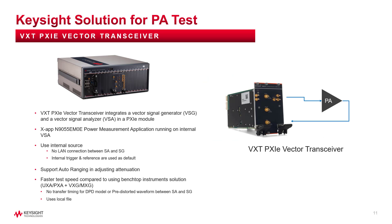Another solution is based on the VXT-PXIe transceiver, which integrates the vector signal generator and vector signal analyzer in a PXIe module. No LAN connection is needed — it uses internal trigger and reference, and supports auto-ranging in adjusting attenuation. This solution for PA testing is much faster compared to using a signal generator plus signal analyzer, because there is no need to transfer a DPD model or pre-distorted waveform between SA and SG. For more information, please check out the demo video in this YouTube channel — the link is in the description box.